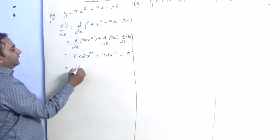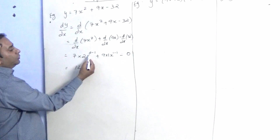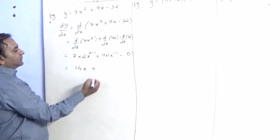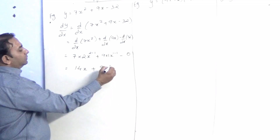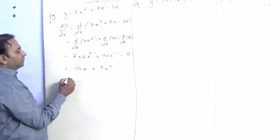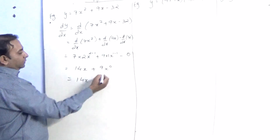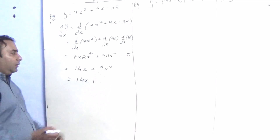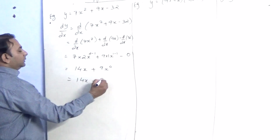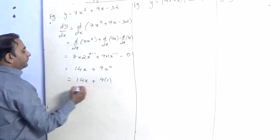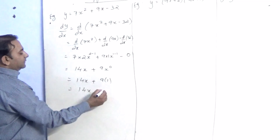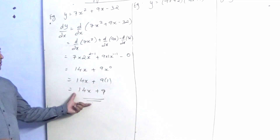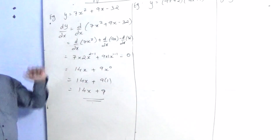So we will have 14, and 2 minus 1 gives x raised to 1, plus 9 x raised to 0. Since x raised to the power 0 equals 1, we will have 14x plus 9. So this will be the solution of this equation.